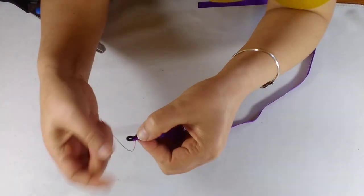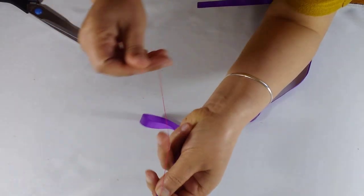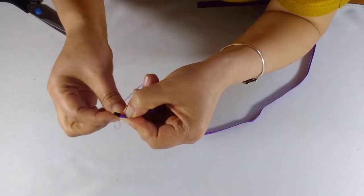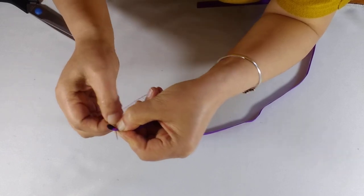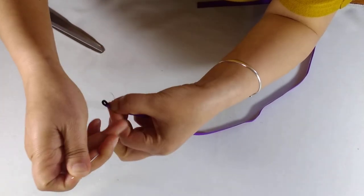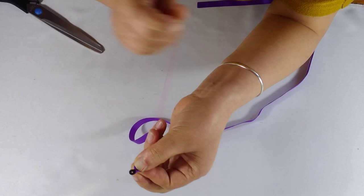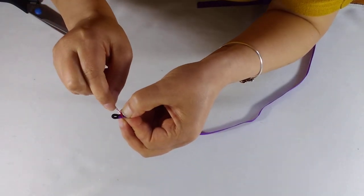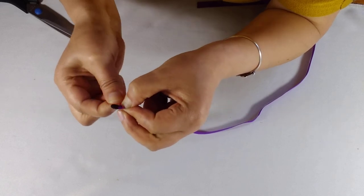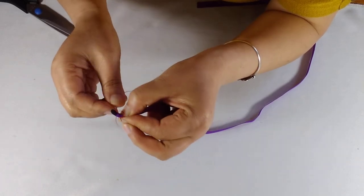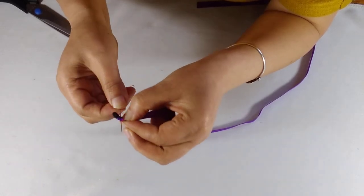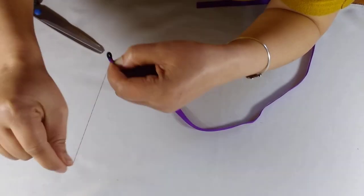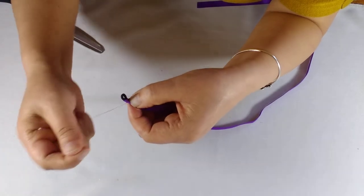So again, you wrap it on the top: ribbon, elastic, elastic, ribbon. Then you just repeat the whole process.